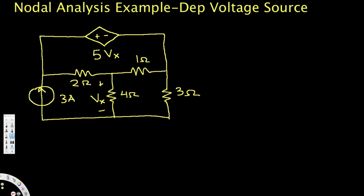In this video we are going to see how to find unknown voltages using nodal analysis. We have a voltage source in the circuit, so we need to handle that carefully. First, let's set the bottom part as ground — that's going to be zero voltage — and label the nodes V1, V2, and V3.